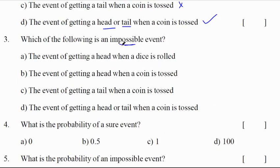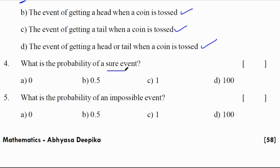Which of the following is an impossible event? Impossible event probability will be 0. The event of getting a head when a dice is rolled. Dice is rolled, it is not a head. The event of getting a head when a coin is tossed. Yes, possibility. The event of getting a tail when it is tossed. The event of getting a head or tail. Yes, but impossible event is option A. What is the probability of a sure event? Sure event, probability equal to 1. What is the probability of an impossible event? Impossible event is probability 0.